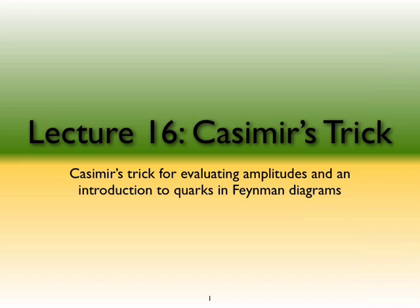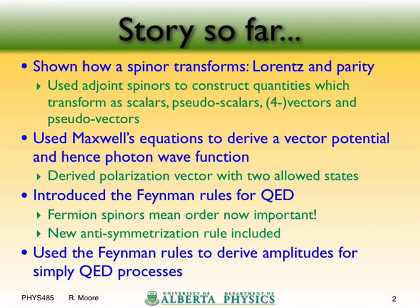Today we're going to go through something called Casimir's trick. To recap what we did last time: we showed how a spinner transforms under Lorentz and under parity transforms, and we used this to construct four types of quantities — scalar, pseudo-scalars, vectors, and axial vectors or pseudo-vectors.